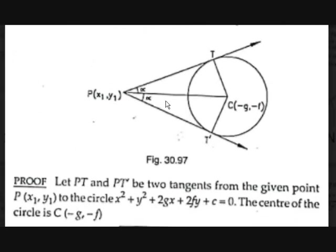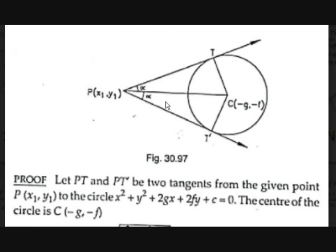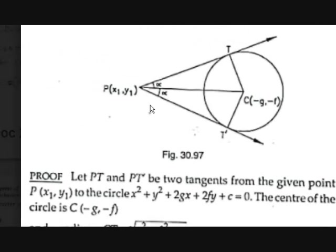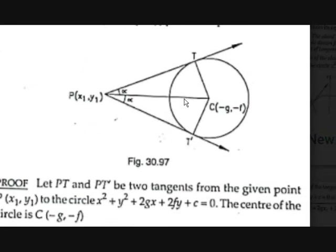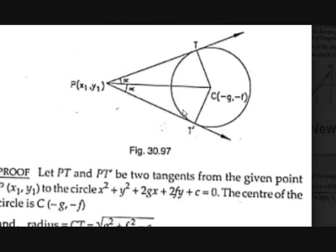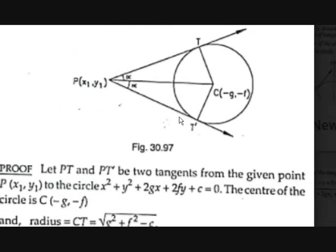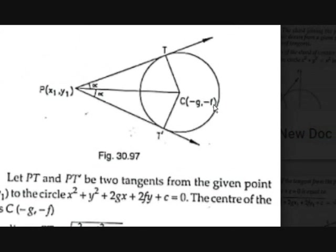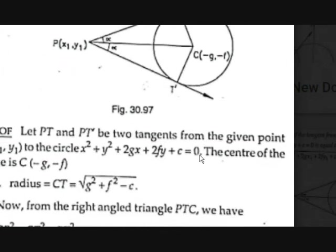Proof: Let PT and PT' be the tangents from the given point P(x1, y1) to the circle x² + y² + 2gx + 2fy + c = 0. If this is the general equation of a circle, then the center of that circle is (−g, −f).